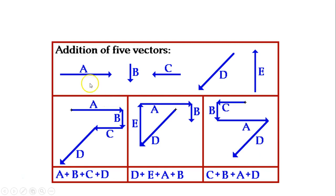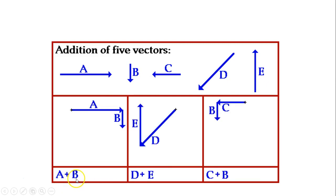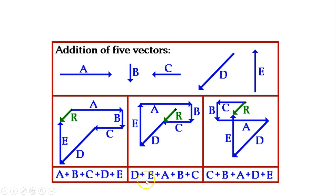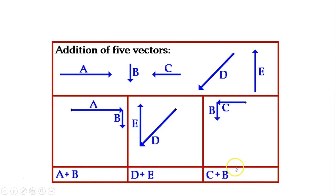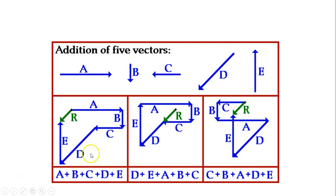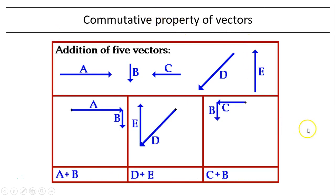Here is an animation of vectors a, b, c, d, and e all added together. There are different ways to add them: you can do a plus b plus c plus d plus e, or a different order like d plus e plus a plus b plus c. It doesn't matter what order you use — your resultant r is the same. The title of this slide should be the commutative property of vectors.